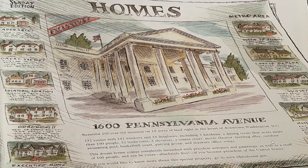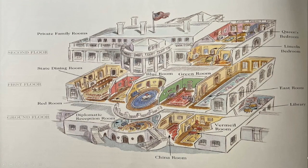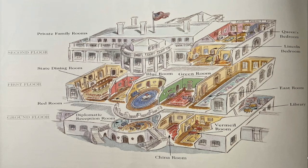For more about this special property, go to www.whitehouse.gov. Here is a picture of the White House. On the left side: private family rooms (second floor), state dining room, red room (first floor), and diplomatic reception room (ground floor). In the middle: china room (ground floor), blue room and green room (first floor). On the right side: library and east room (first floor), Lincoln bedroom and Queen's bedroom (second floor).